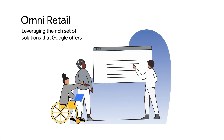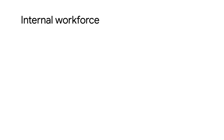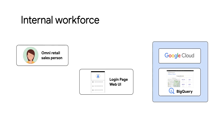Omni Retail provides services to their customers with the rich set of solutions that Google offers. They bring together data from multiple sources across their sales, finance, inventory, supplier, and CRM systems into BigQuery for seamless analysis. Sales staff then use a custom sales web application to directly access those reports and insights derived from BigQuery to provide better customer experiences.